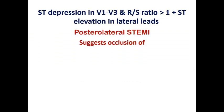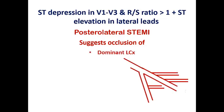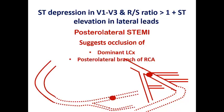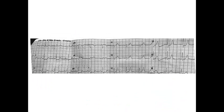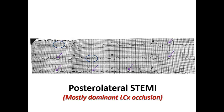When there are ECG changes of posterior STEMI with ST elevation in lateral leads, the first possibility is dominant LCX, since lateral wall involvement raises suspicion of LCX. However, it may also be the posterolateral branch of RCA, which by its name supplies both the posterior and lateral walls. In this ECG example, the patient has ST elevation in lead I and aVL with reciprocal depression in inferior leads — suggesting lateral STEMI — along with ST depression and RS ratio greater than one in V3, V4, and V5, indicating posterolateral STEMI.